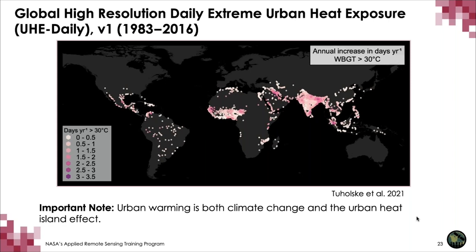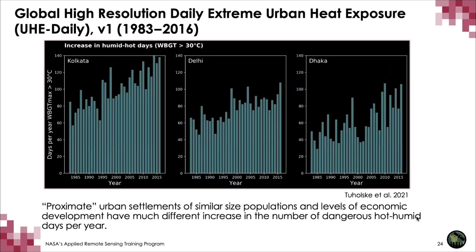What's really interesting about this dataset is we can dive into very localized heterogeneous patterns. Even though it was developed with a very top-down approach, it's very locally applicable. Here we have three large South Asian cities — Kolkata, Delhi, and Dhaka. On the Y-axis we have days per year where the wet bulb temperature exceeded 30°C, and on the X-axis we have time. Kolkata tends to be, on average, hotter and more humid than Delhi and Dhaka, and its rate of change is greater in terms of the number of hot, humid days in 2016 versus 1983.